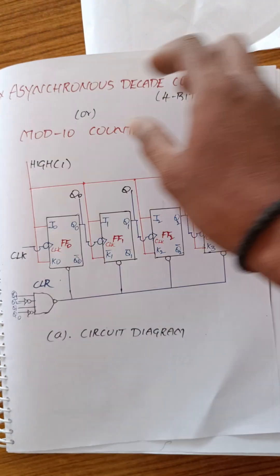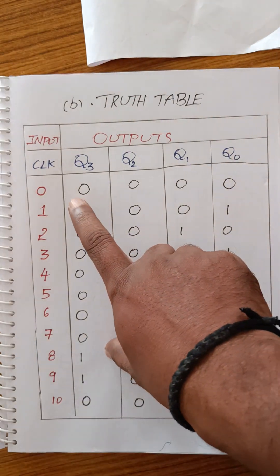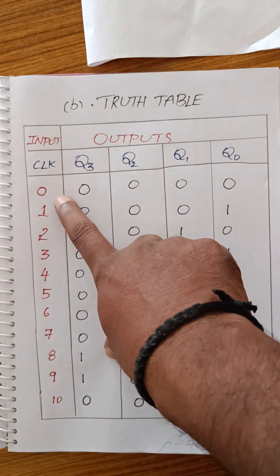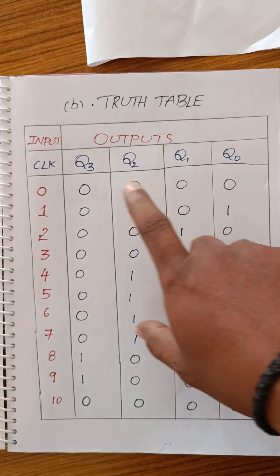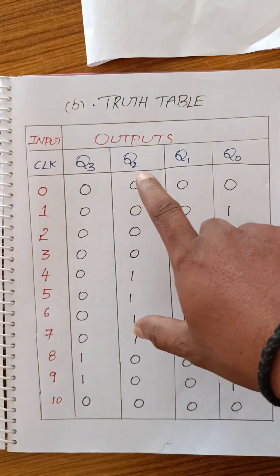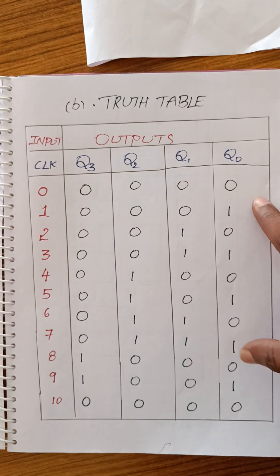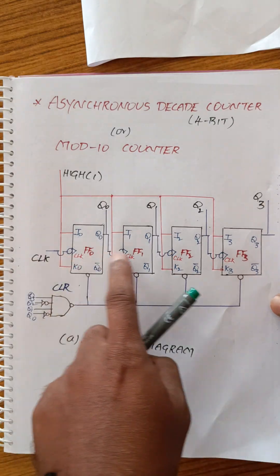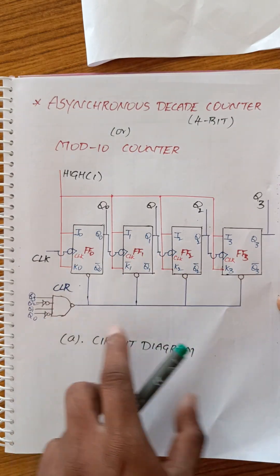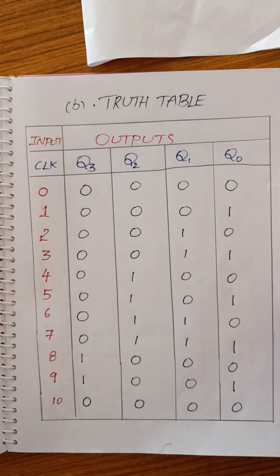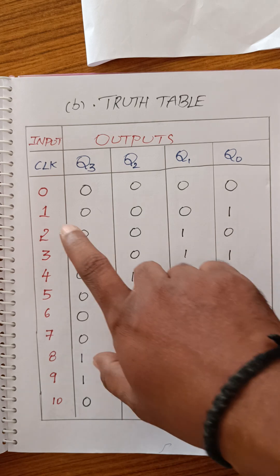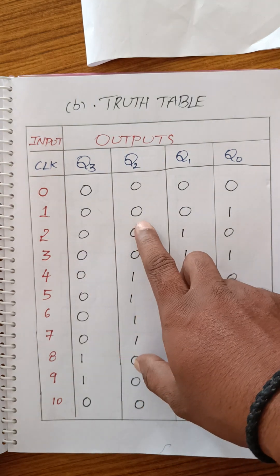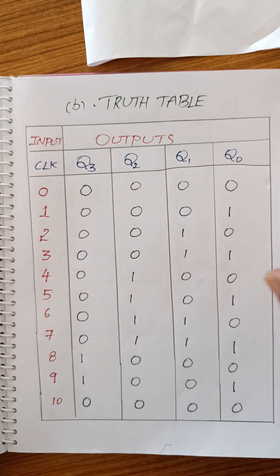Let us see the first count. Whenever the initial clock pulse is 0, all values Q3, Q2, Q1, Q0 are 0. When the first clock pulse is applied, the output data follows the same process as a standard counter. Only the first flip-flop toggles; the remaining flip-flops maintain their previous state.